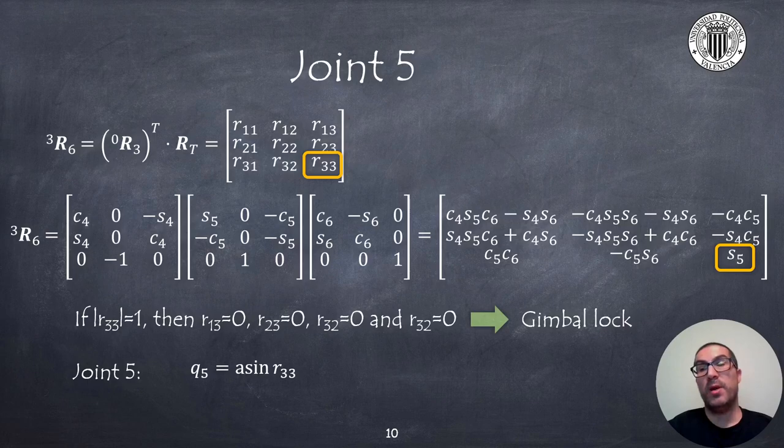We assume that the numerical values for the matrix R36 are known now, as well as the symbolic expressions derived from the Denavit-Hartenberg transformation. The value for joint 5 can be obtained from the arcsine of the element R33 of the rotation matrix as highlighted. If that value is 1 or minus 1, then we are in a singular configuration as a consequence of the well-known gimbal lock problem. In that case, Q5 will be 0 or pi, and the remainder of joints Q4 and Q6 will be linearly dependent.